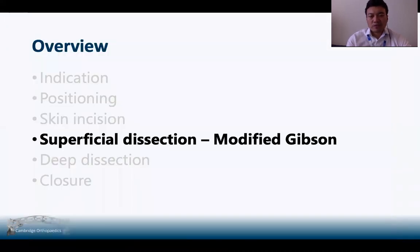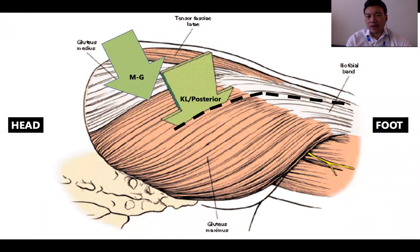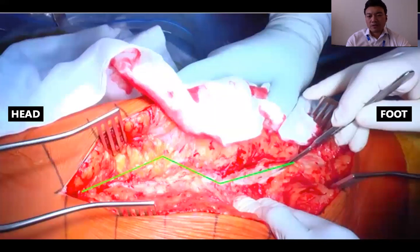Moving on to the superficial dissection, which is the modified Gibson component of the approach. For a standard posterior or Kocher-Langenbeck approach, the fascial incision follows one line, but for the modified Gibson approach we want to be slightly more anterior to fully dissect out the anterior border of gluteus maximus. This surgical image demonstrates the Z-step I do in the gluteus maximus muscle to ensure I'm anterior enough. While the distal fascial incision is similar, the modified Gibson requires the fascial incision to be slightly more anterior.